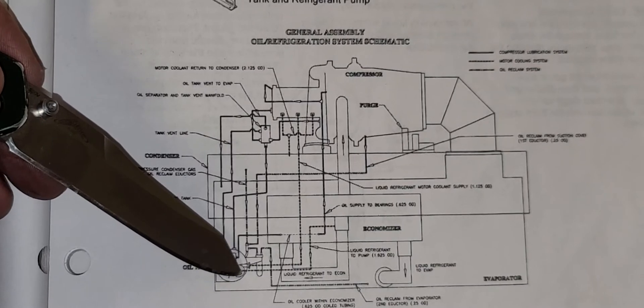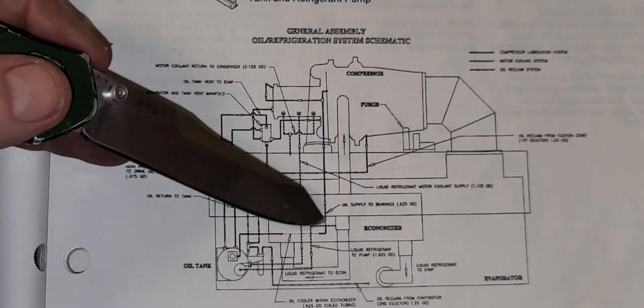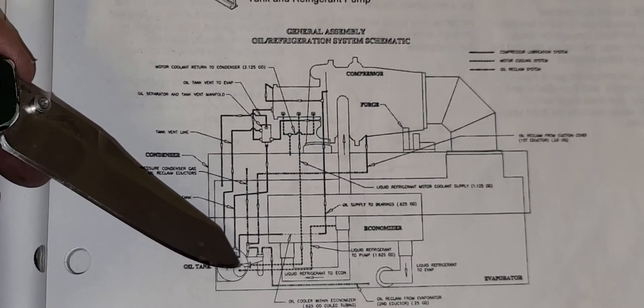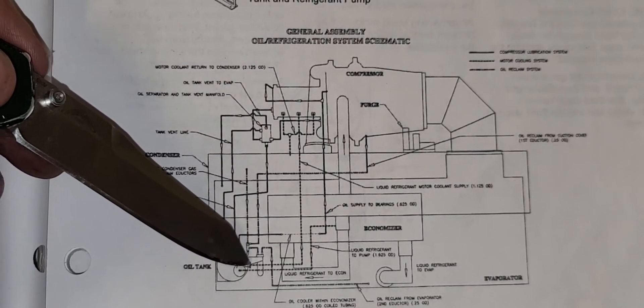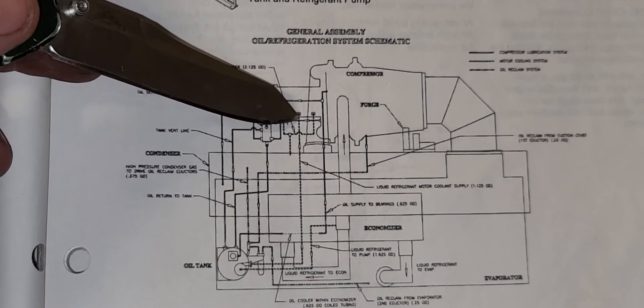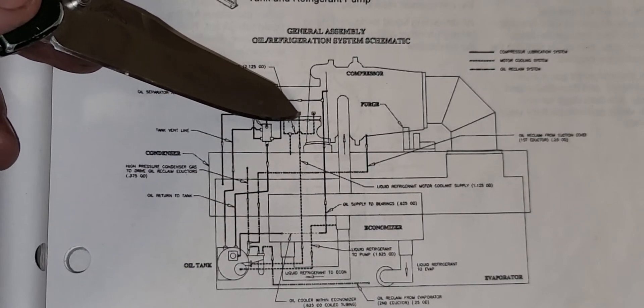So we have a pressure drop while this pump is running. That's what allows this liquid to be drawn out of the condenser. Then of course the centrifugal force does its magic and that liquid is discharged up through an orifice in the bottom of the stator on these motors.